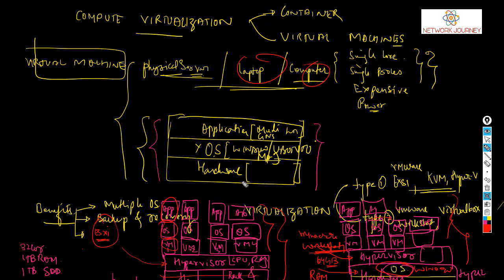This is virtualization — where you don't need multiple physical devices to install multiple operating systems or test different applications. With one device, the hypervisor allocates RAM and CPU, and you can build multiple VMs, put your operating systems on them, and make use of applications.